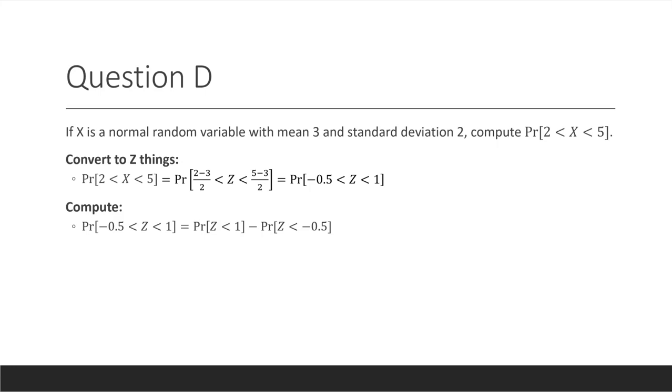We're going just as we did earlier, which is probability of z less than 1 minus this over here, where we've turned this guy here into 1 minus the probability that z is greater than minus 0.5.